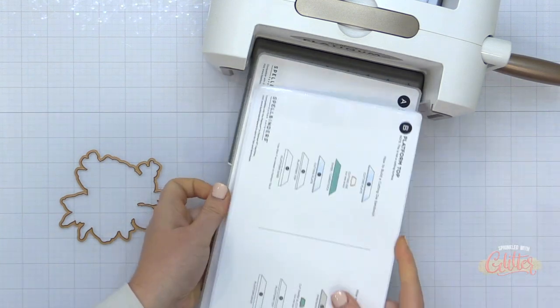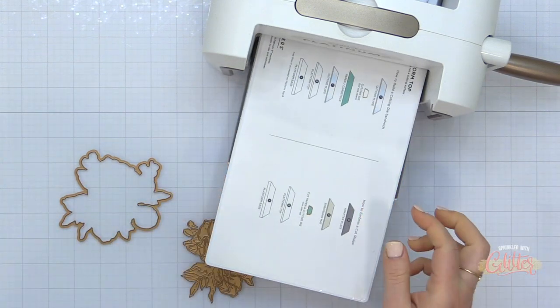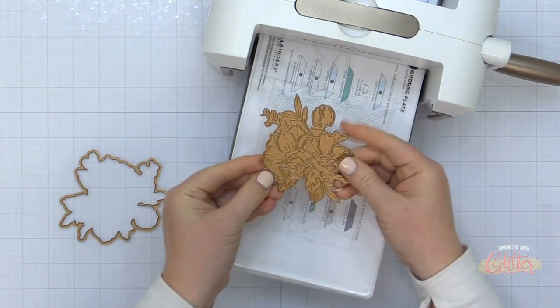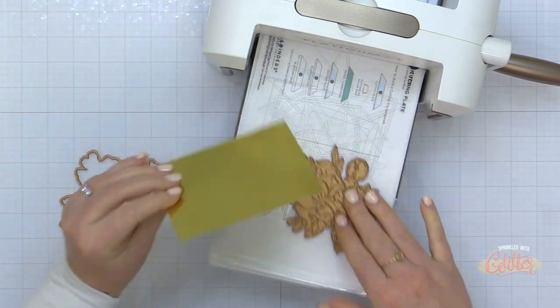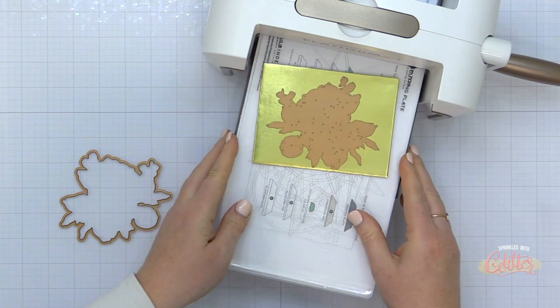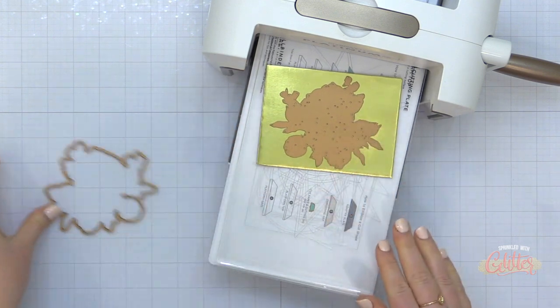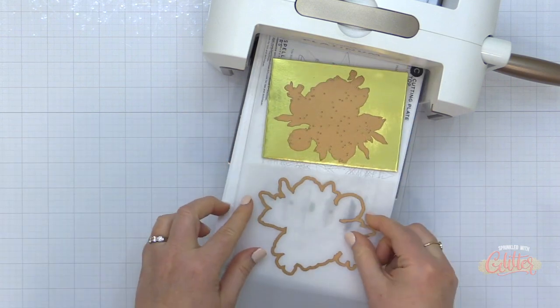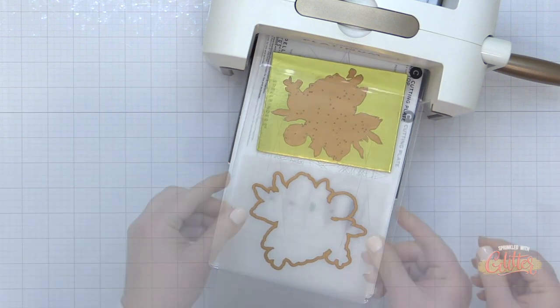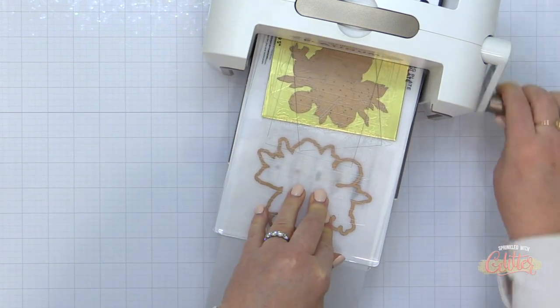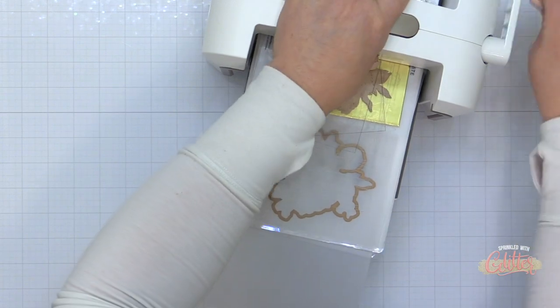Now I'm going to start by doing some die cutting and I am using my Spellbinders Platinum 6 with the universal cutting plate system. I have the platform which is A, the platform top which is B, and C the cutting plate. I have some mirror gold foil from Spellbinders and the anemone etched dies here, and I am going to cut the detail piece from the mirror gold cardstock and the shadow layer from some vellum.